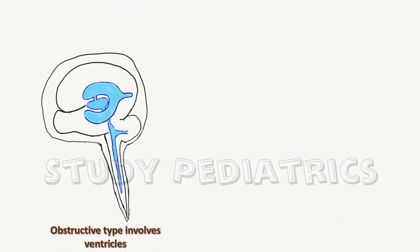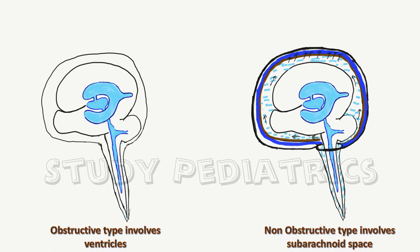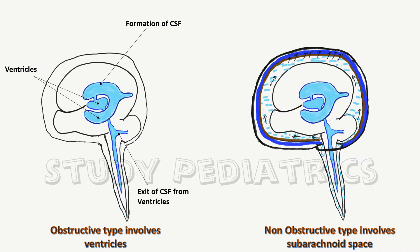As you can see, the obstructive type involves only the ventricles, which are shaded in blue in the image shown. Since the aqueduct of Sylvius is considered the narrowest part of the ventricular channel, the majority of obstructive causes may be due to further narrowing or blockage at this part.